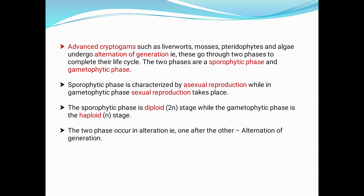The alternation of generation means these organisms go through two phases to complete their life cycle: the sporophytic phase and the gametophytic phase. The sporophytic phase is characterized by asexual reproduction, while in the gametophytic phase, sexual reproduction takes place. Both sexual and asexual reproduction take place alternatively.